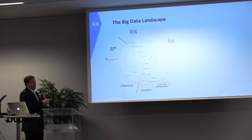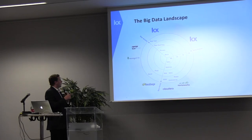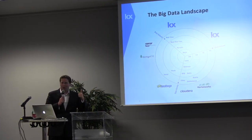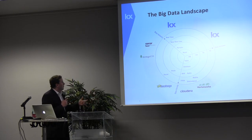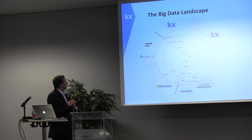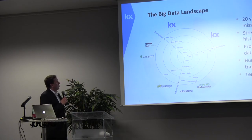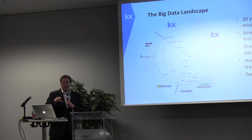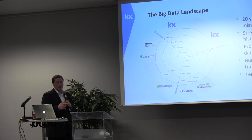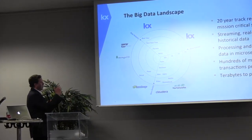Someone mentioned the three V's of big data earlier — velocity, volume, variety. This is a map of where all the different technologies sit roughly. We're very much up in the top there between velocity and volume — huge volumes of data being streamed through in real time, where you've got to be able to do both historical analysis as well as real-time analytics. So a 20-year track record in mission-critical systems: streaming, real-time, and historical data processing, analyzing data in microseconds. KX has maybe six or seven different ways of storing dates and timestamps, with nanosecond precision — which is actually more accurate than some CPUs.